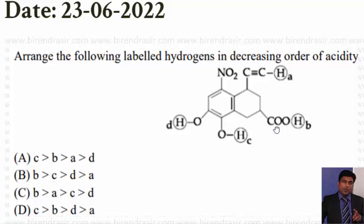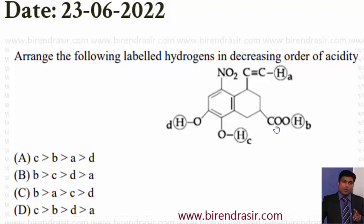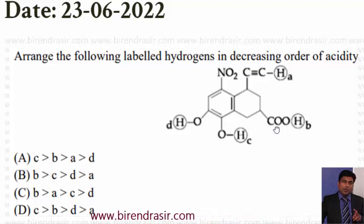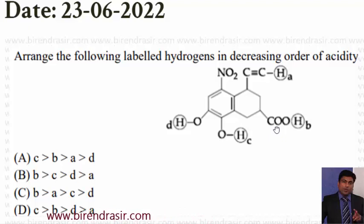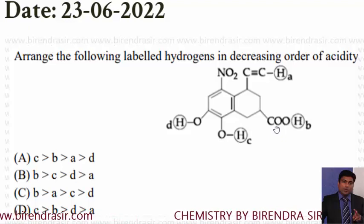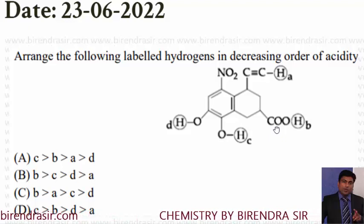Now, this terminal alkyne is of course less acidic than alcohol, water, and phenol. So, this will be last here because these two are phenolic H. You need to check the option where this is given at the end — so it is B. We have got the answer.